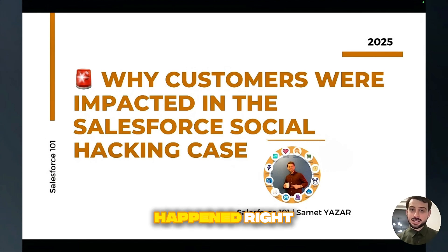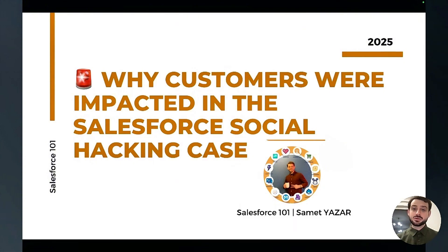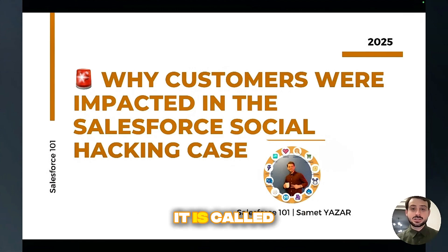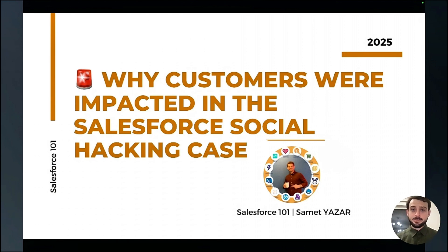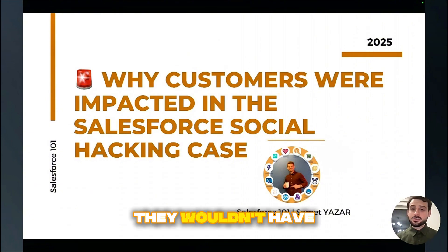It is what has happened — someone somehow deceived an org user to allow a fake connected app to reach some data in the Salesforce org. It is called social hacking because human beings are deceivable. But mainly he emphasized that if they had enabled IP restrictions, they wouldn't have had this problem happen.